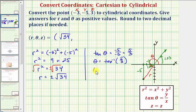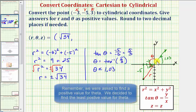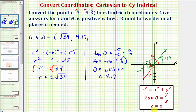We found from the calculator the angle theta was approximately 1.03 radians, but to find the angle in the third quadrant we had to add pi radians, which gave us approximately 4.17 radians. And the z-coordinates are the same in both cylindrical and Cartesian coordinates, so z is equal to positive three.